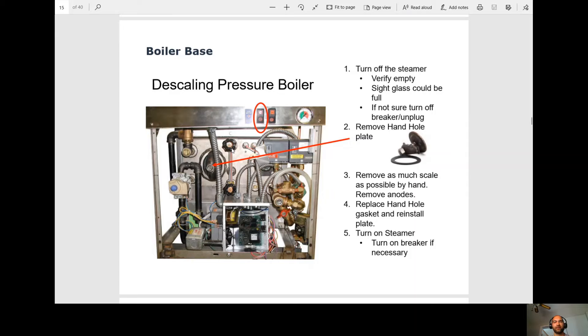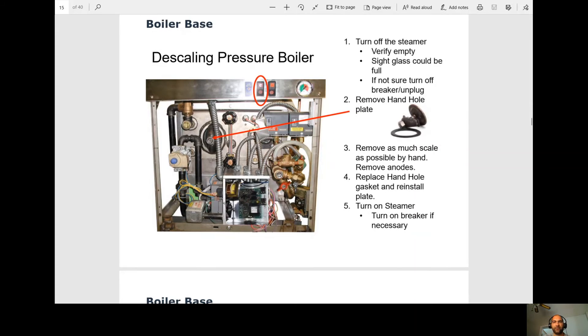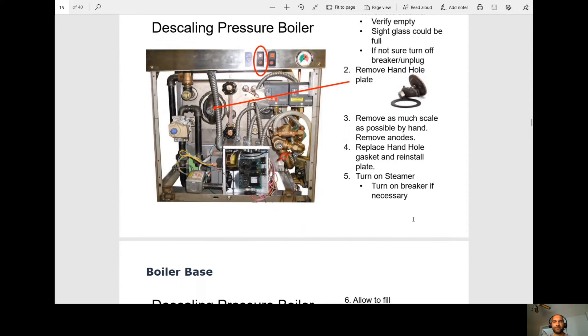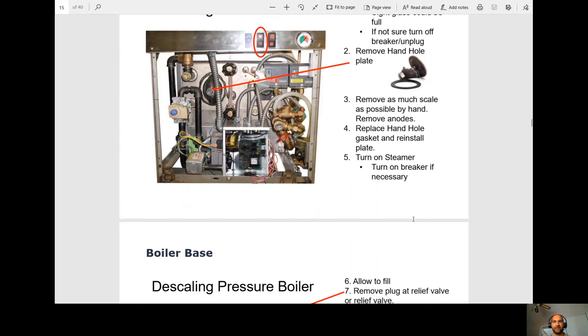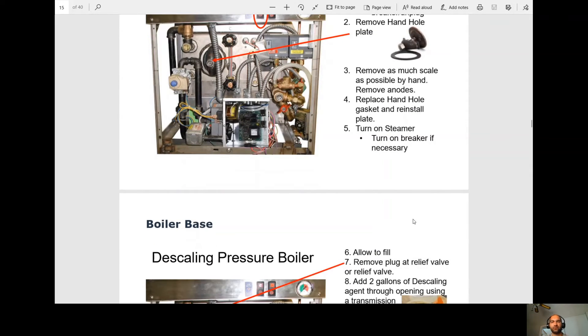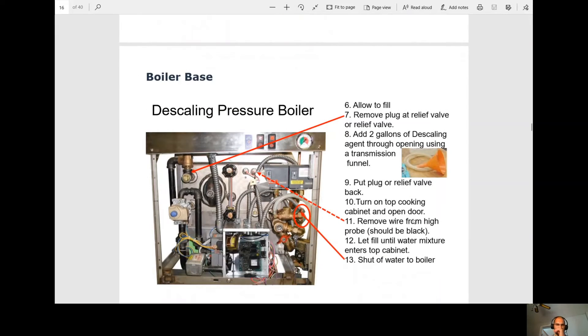So you want to do your blowdown and then at that point, you would come and remove this handhold plate. At that point, you remove as much scale as possible by hand, so you just put your hand and arm in there. Take as much as you can. You want to remove the anodes. You want to put back the handhold and change the gasket if needed. At that point, we're going to turn on the steamer. So you're going to let the steamer fill.